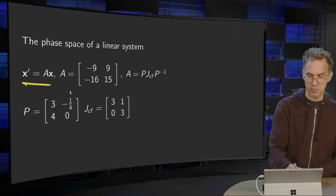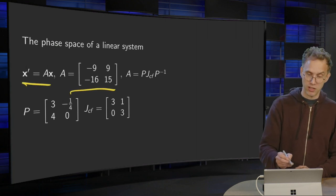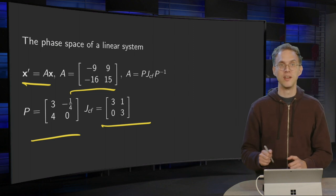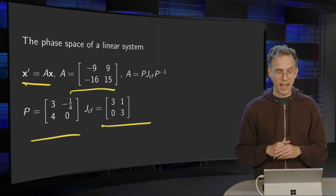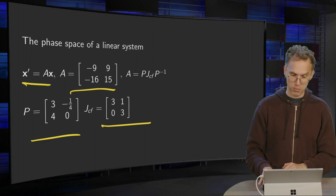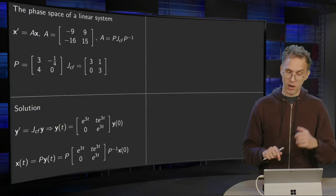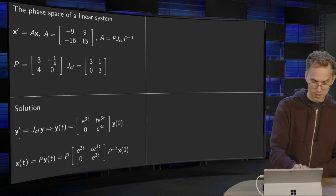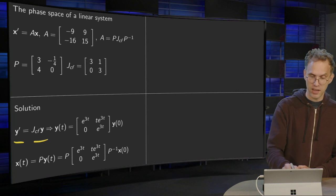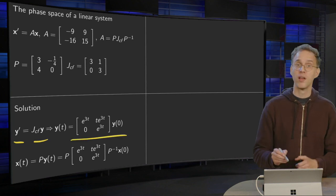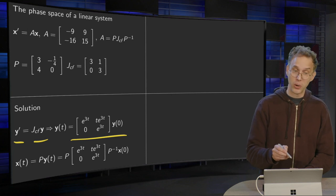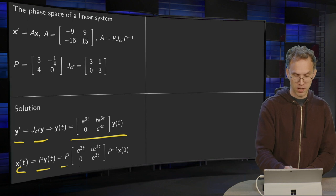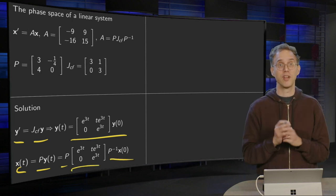We will take a look at the following system of differential equations: X prime equals AX. This is matrix A. We have seen earlier that this A is similar to this Jordan Canonical Form over here, with matrix P. So we have done all this algebra before. We will now focus on the phase space. We could move to the Y coordinate: Y prime equals JCF times Y, giving this solution. And we can also express this in our original X: X equals P times Y equals P times the matrix here times P inverse X0.